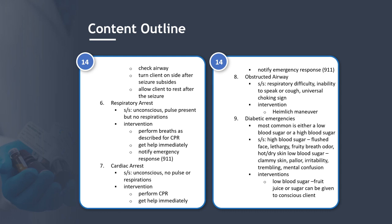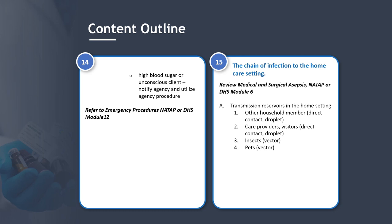Cardiac arrest — signs and symptoms include unconsciousness with no pulse or respirations. Intervention: perform CPR, get help immediately, notify emergency response 911. Obstructed airway — signs and symptoms include respiratory difficulty, inability to speak or cough, and the universal choking sign. Intervention: the Heimlich maneuver. Diabetic emergencies — the most common are low or high blood sugar. Signs of high blood sugar: flushed face, lethargy, fruity breath odor, hot dry skin. Signs of low blood sugar: clammy skin, pallor, irritability, trembling, mental confusion. For low blood sugar, fruit juice or sugar can be given to the conscious client. For high blood sugar or an unconscious client, notify the agency and utilize agency procedures. Refer to Emergency Procedures NATAP or DHS Module 12.